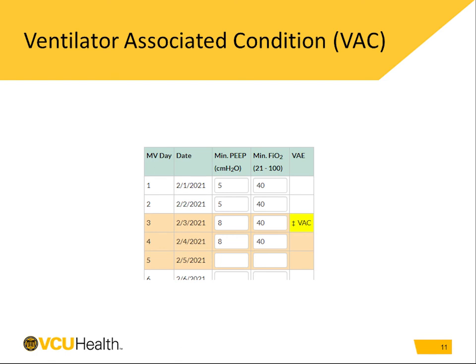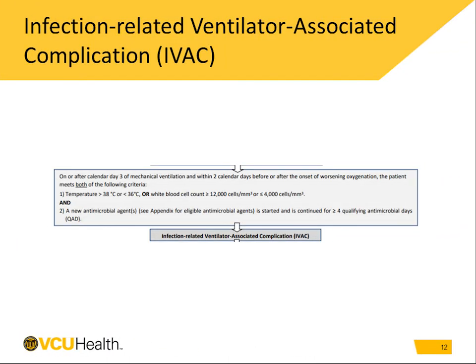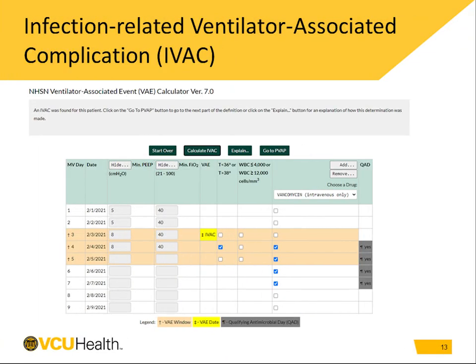Here is an example. You can see there was a PEEP of five for two days and then it increased to eight. This meets criteria for VAC. It is important to note that VACs are not included in the reported IVAC numbers. Once a patient meets criteria for a VAC, we move down the algorithm to IVAC. To meet criteria for IVAC, you must meet VAC criteria and have either a temperature greater than 38 degrees Celsius or less than 36 degrees Celsius, or a white blood cell count of 12,000 or higher or 4,000 or lower. A new antimicrobial agent must be started and continued for four or more days. In this example, the patient met criteria for a VAC, then had a fever greater than 38 on the same day, and vancomycin was begun and continued for four days.